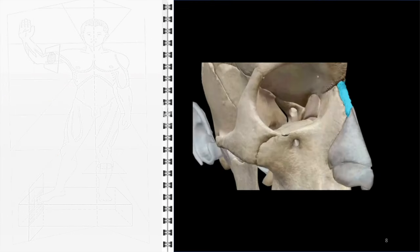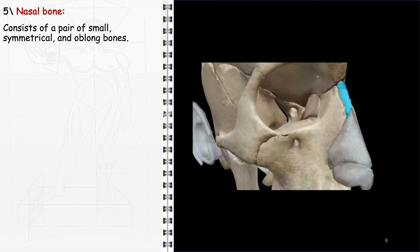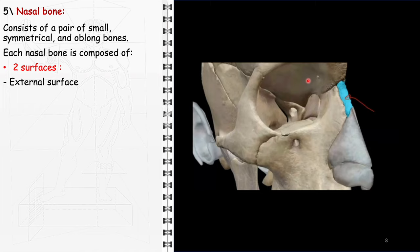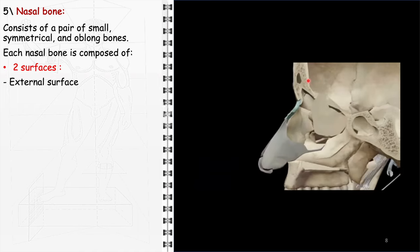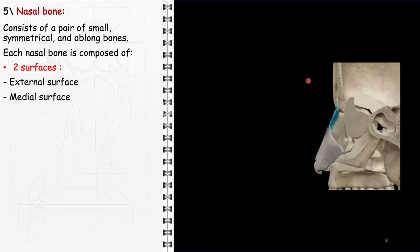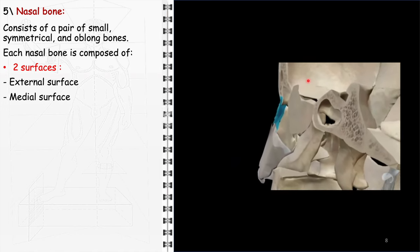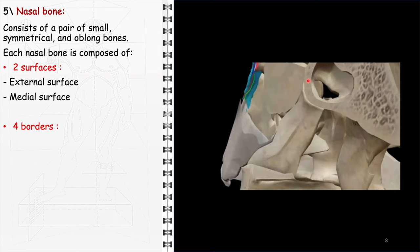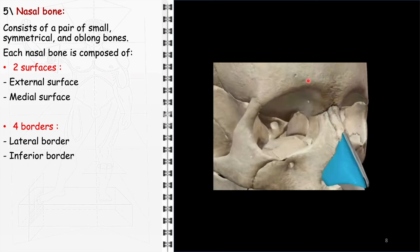The nasal bone consists of a pair of small, symmetrical, and oblong bones. Each nasal bone is composed of two surfaces and four borders. The two surfaces include the external surface, which forms the bridge of the nose and contributes to the facial profile, and the medial surface, which faces the opposite nasal bone at the midline, forming the upper part of the nasal septum. The four borders are: the lateral border, articulating with the frontal process of the maxilla; the inferior border, which connects with the cartilaginous part of the nose; the medial border, aligning with its counterpart to form the nasal bridge; and the superior border, which articulates with the frontal bone, contributing to the formation of the nasal part of the frontal bone.